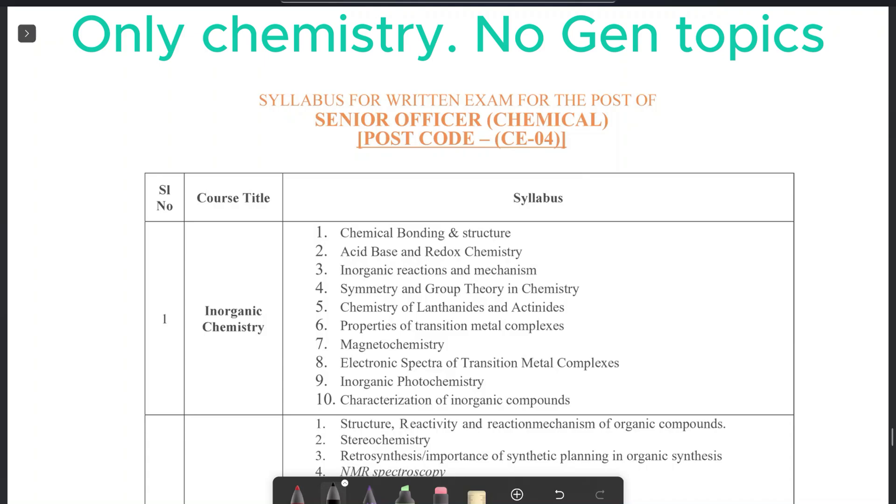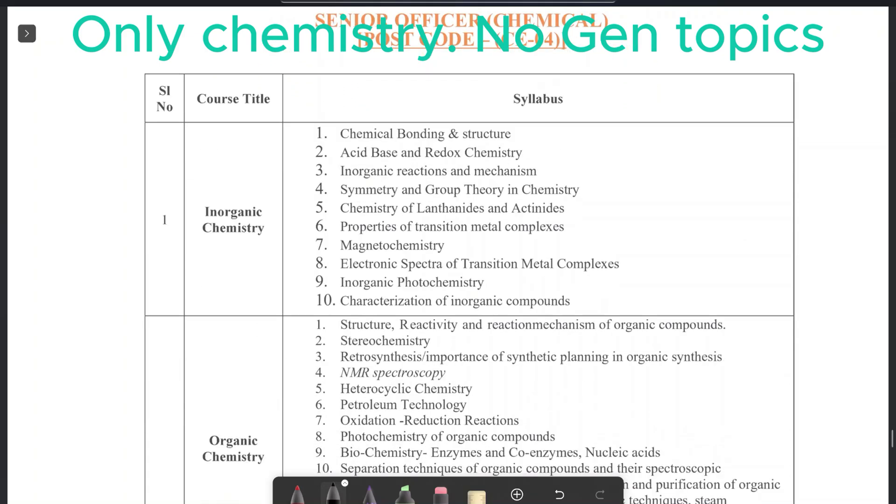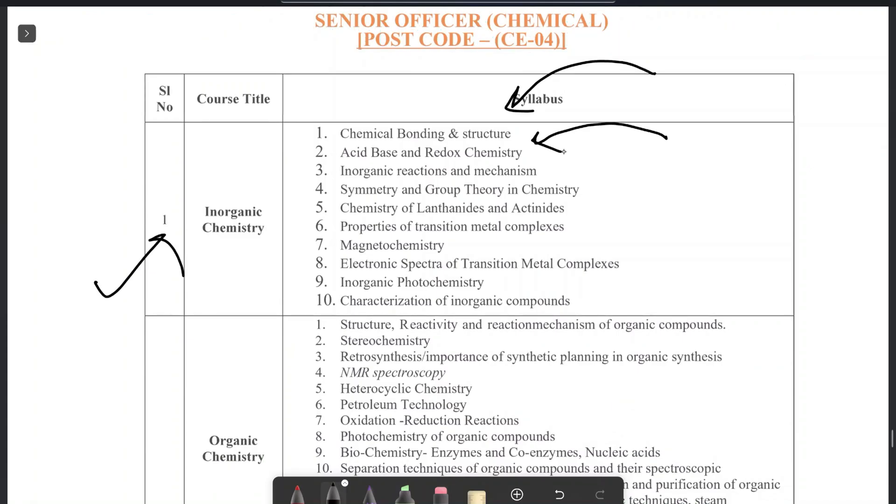This is the syllabus for written exam for the post of senior officer chemical. This is a very authentic, genuine syllabus. Inorganic chemistry will comprise of your chemical bonding and structure, acid-base and redox chemistry, reaction mechanism, symmetry, lanthanide-actinide chemistry, chemistry of properties of transition metal complexes, that is your coordination chemistry, magnetic chemistry, electronic spectra, inorganic photochemistry and characterization of inorganic compounds.